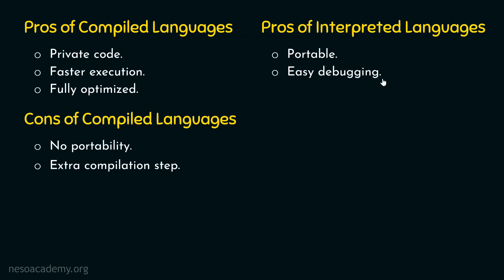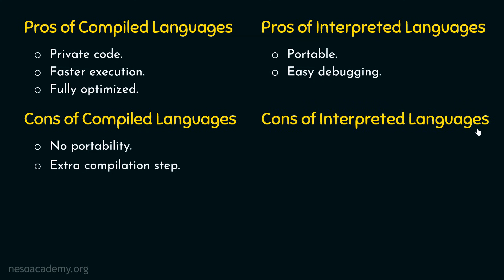After discussing the pros of interpreted languages, we are ready to discuss the cons. The first disadvantage is that interpreted language needs an interpreter. Whenever we want to run code written in an interpreted language, we need to provide it to the interpreter. This is not the case with compiled languages, where we compile once and get an executable we can run multiple times. With interpreted languages, the code must be provided to an interpreter every time. The second disadvantage is that it is slower, because the translation happens every time.